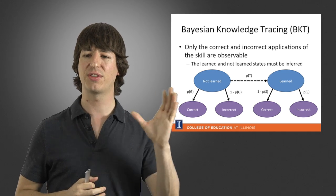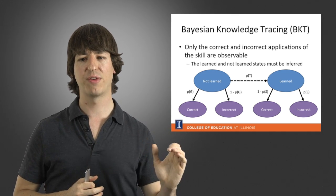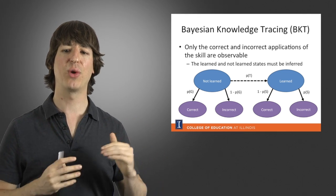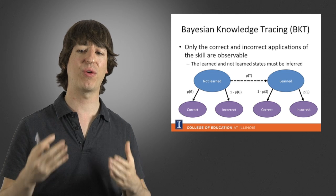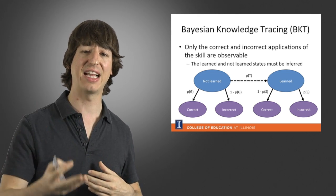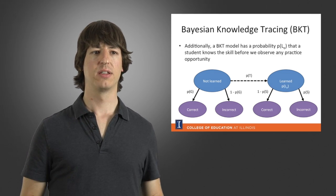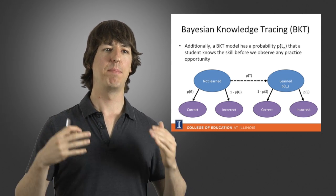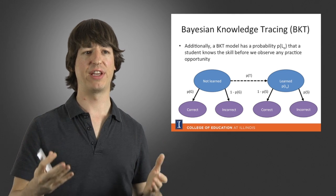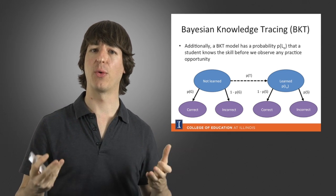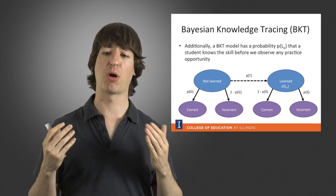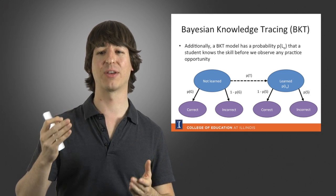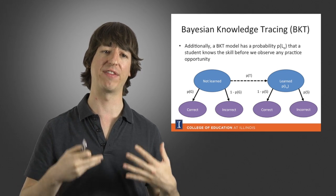In this model, there are two states and we observe successes and failures. The states themselves can never be observed — we can only infer whether the student is in a given state based on our observations. There is one last element: before the student even starts practicing the skill, it's possible they already know it. So we define a probability L0 — the probability that the student has already learned the skill at practice opportunity zero, before they start applying it.